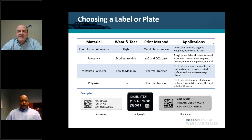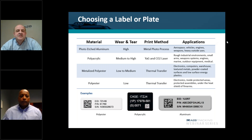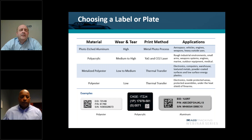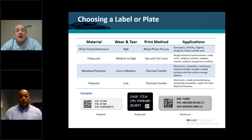For the most challenging environments — aerospace vehicles, engines, heavy outdoor use, 24/7 outdoor exposure, or indoor environments exposed to very harsh acidic chemicals — you want to step up to photo etched aluminum. That is the most durable material available for UID compliance. The print method is a metal photo process where the marking is embedded in the anodic layer of the metal, completely sealed and protected against harsh chemicals and extreme temperature conditions. Photo etched aluminum can handle temperatures as high as 500 degrees Fahrenheit, and with it being fully protected, you have no issue with any fading.